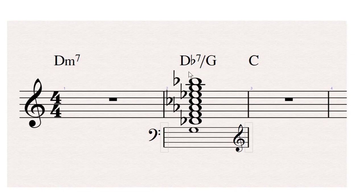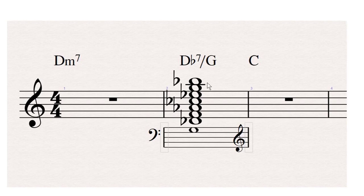This is basically how somebody like Bud Powell would play it — he would see it with the sharp 11th in the bass. Remember what I said about substitute dominant chords: substitute dominant chords are non-diatonic chords; secondary dominants are diatonic. So if you've got a key signature with a secondary dominant chord you can find the tensions that way, but substitute dominant is different — the tensions are always a major ninth above any chord tone. So these tensions here are all a major ninth above a chord tone.